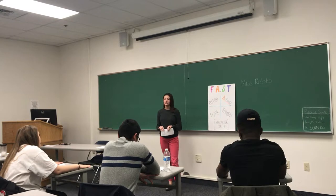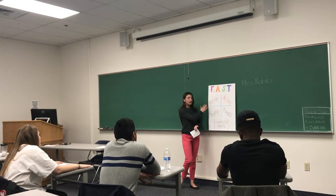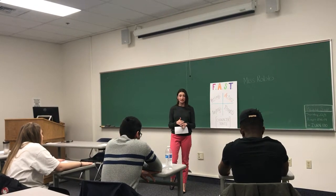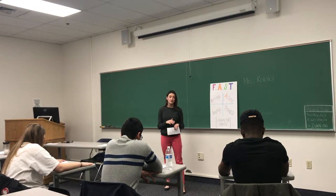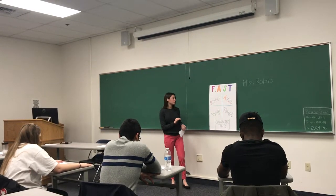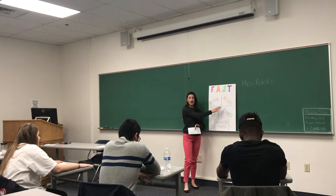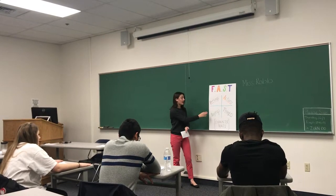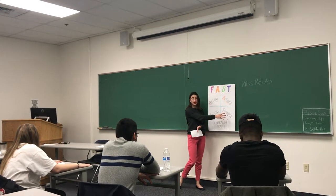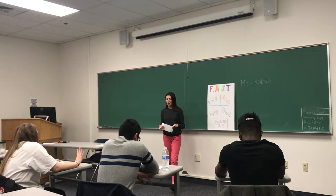Today what I want to focus on is using context clues to go over how we can analyze other parts of the text to look at internal characteristics or character traits that someone has in a novel. So we're going to use the FAST model to do this. F stands for feelings, A for actions, S for sayings or dialogue, and T for thoughts — together that makes FAST.